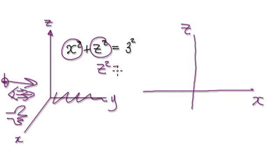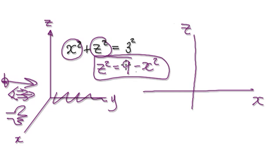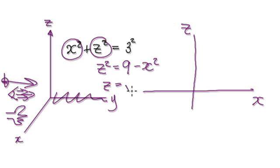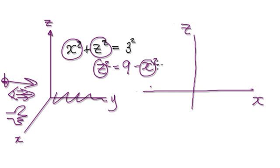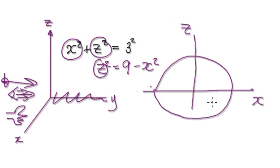Let's rearrange this: Z squared equals 9 take away X squared. Remember, radius of 3. Hopefully you can see that this is an equation for a circle. If you plot Z versus X, this is a circle of radius 3.